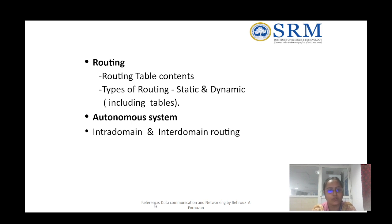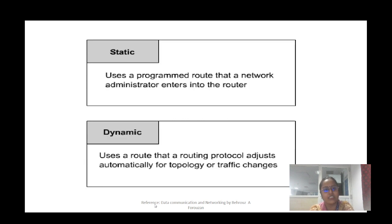For any autonomous system, routing is of different categories: intra-domain routing and inter-domain routing. In static routing, the programmer sets the routes — a network administrator enters the route into the router using a command called IP route. For dynamic routing, a protocol is used that automatically adjusts based on the topology or traffic changes.